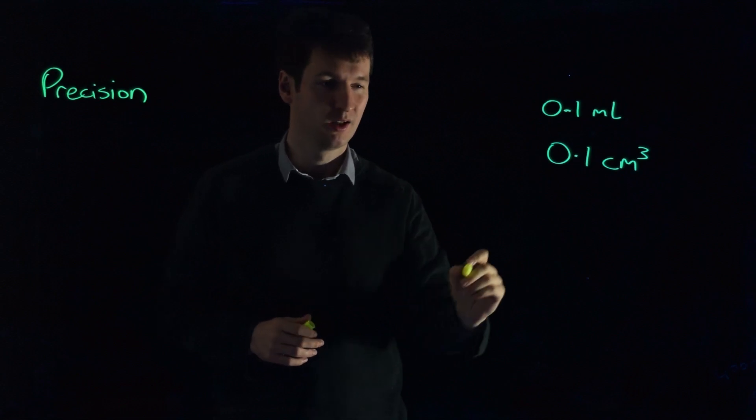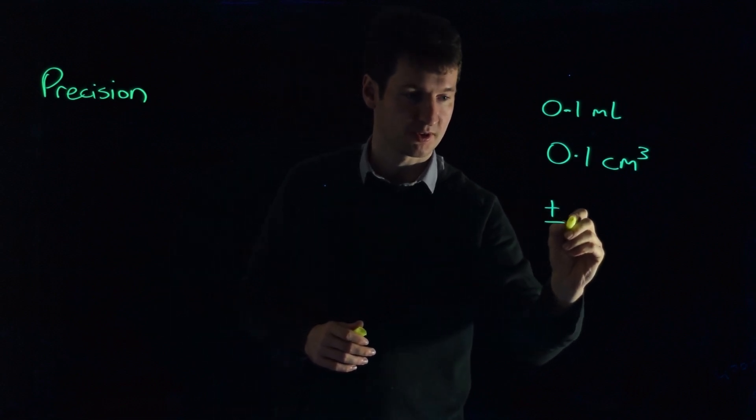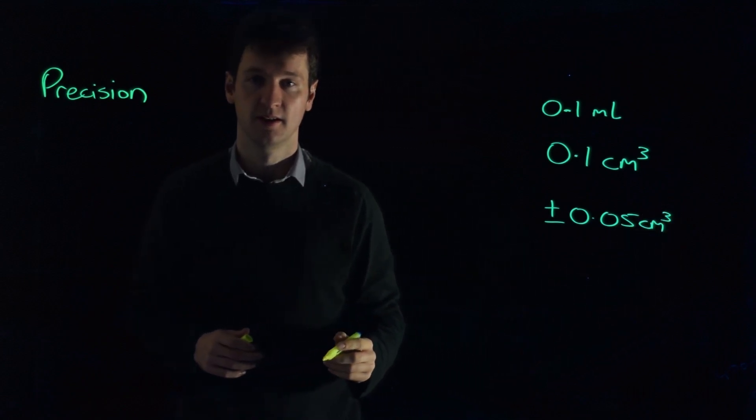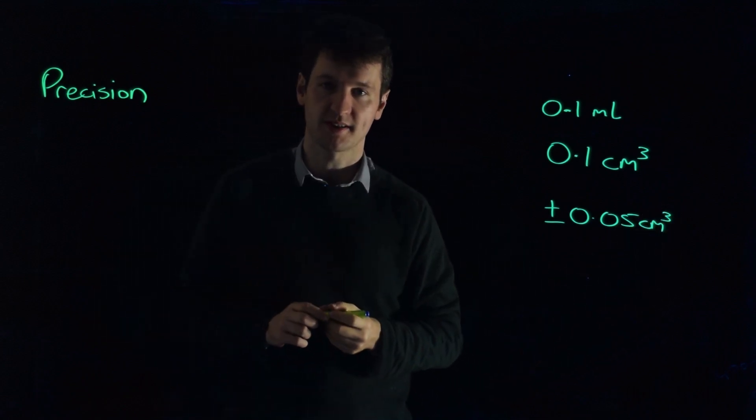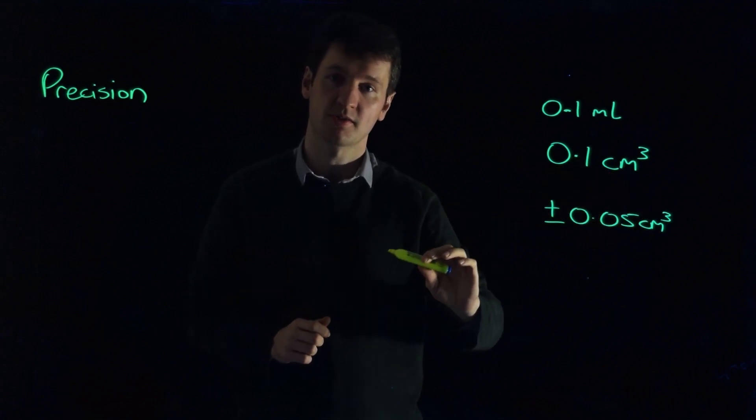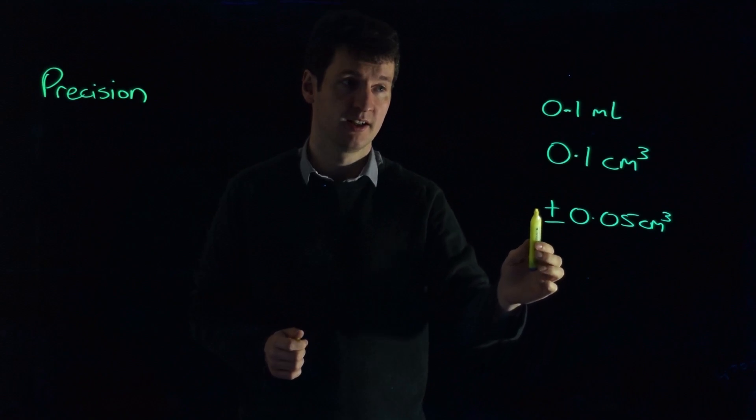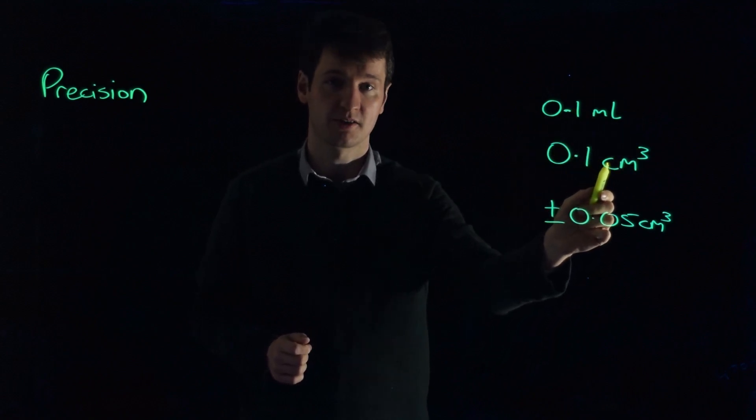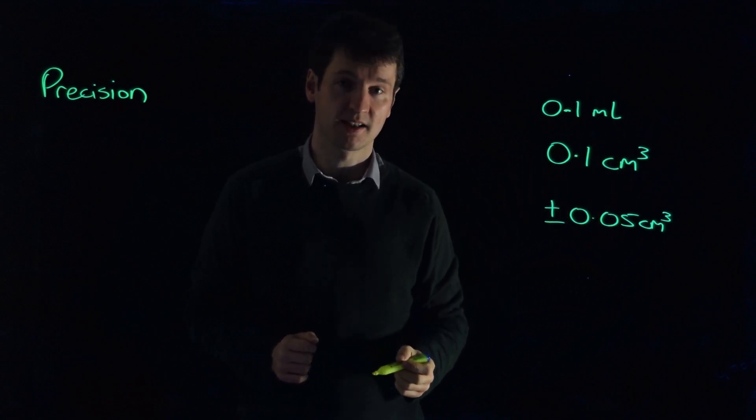What does that mean? Well, it gives you an accuracy of plus or minus 0.05 centimeters cubed. In practical terms, what does that mean? What should my results look like? Well, it means that if you take your smallest result away from your biggest result, the difference should be no more than 0.1 milliliters or 0.1 centimeters cubed, those being the same unit.